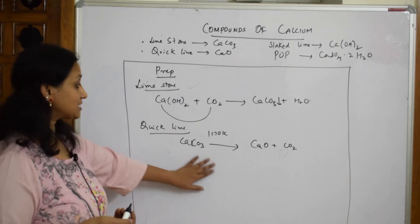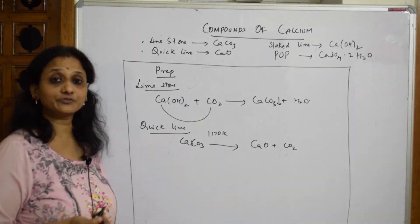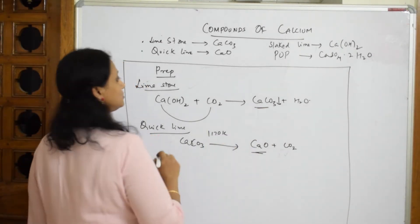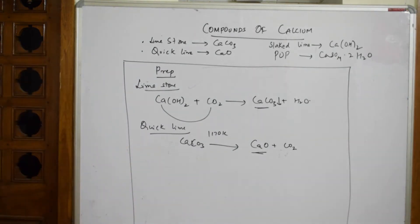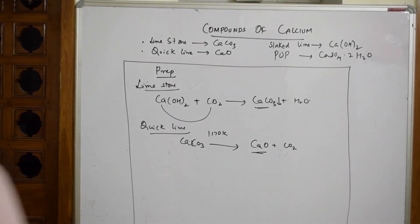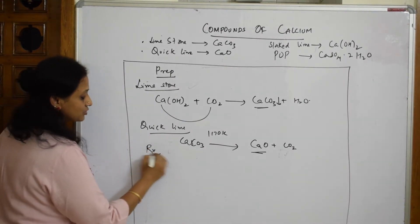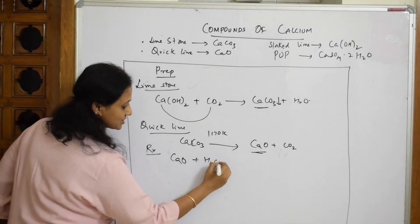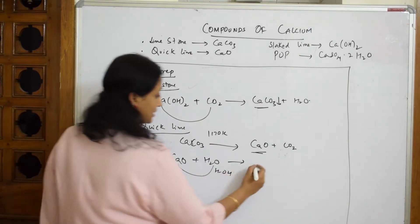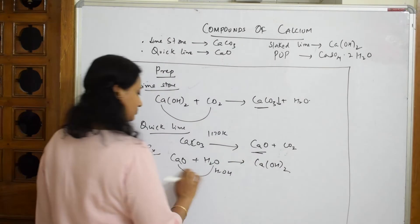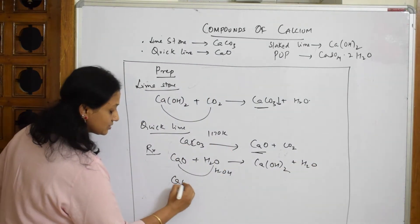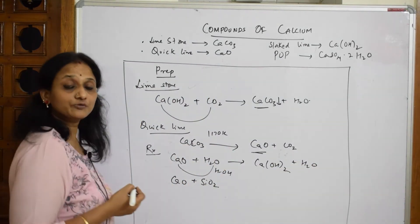Now let's see the reactions of quicklime, that is calcium oxide. When calcium oxide reacts with water, the simplest reaction gives calcium hydroxide. So CaO + H₂O → Ca(OH)₂.